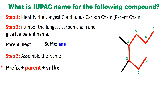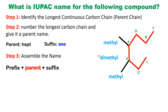Now, let's put the name together in the correct order: prefix, parent name, and suffix. In this molecule, we have two methyl groups — one attached to carbon-3 and the other to carbon-4. When identical substituents are present, we use prefixes like "-di-" to indicate the number of groups. That's why these are named dimethyl.